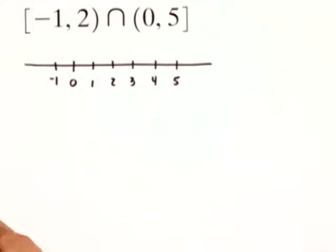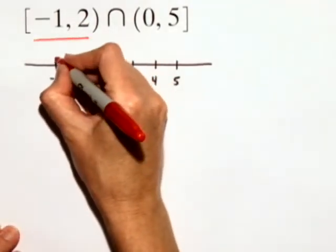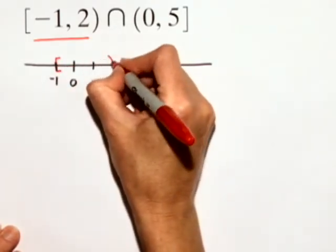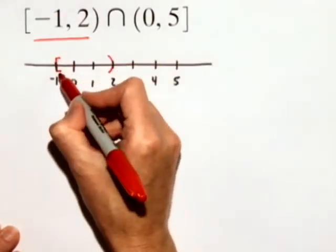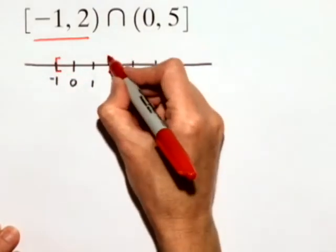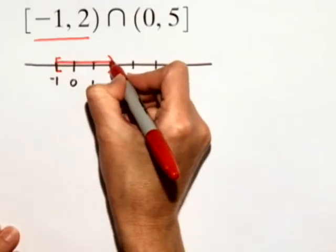Let's graph the first interval. We'll graph that in red. The interval from negative 1 to 2 includes negative 1 but does not include 2. So we use a bracket on negative 1 to show it includes negative 1 but a parenthesis on 2 to show that it does not include 2.